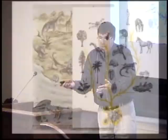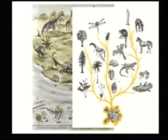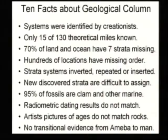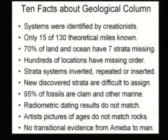These different kinds somehow created new separate kinds of organisms, and of course man is just the end product of that. But here are some problems. These systems, these layers, were actually defined by creationists.